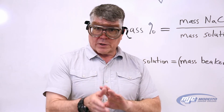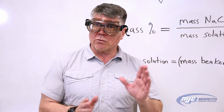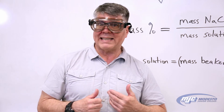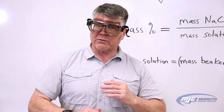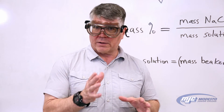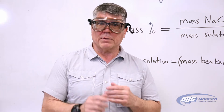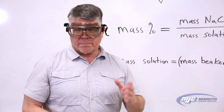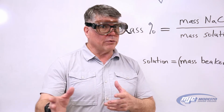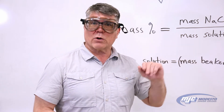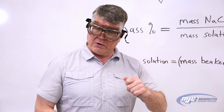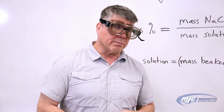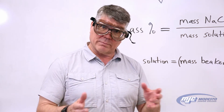Then what I do is I have a spreadsheet or a program where I've graphed the dependent variable — which would be the absorbance, or in this experiment the density — on the y-axis, versus the independent variable, the property that we're trying to determine: the concentration of lead, or the mass percent sodium chloride. Then I have my program draw the best-fit straight line, get the equation of that line. Knowing that equation, I can figure out how much lead is in your water, and you'll be able to determine the mass percent sodium chloride in your unknown solution.